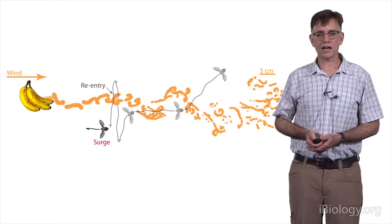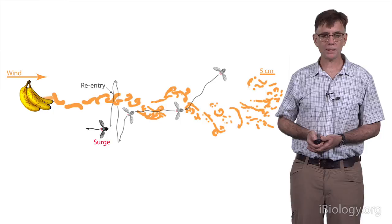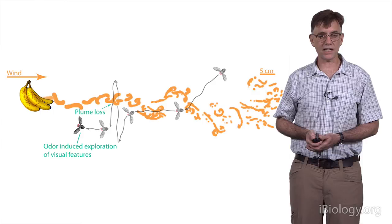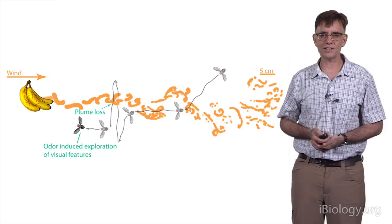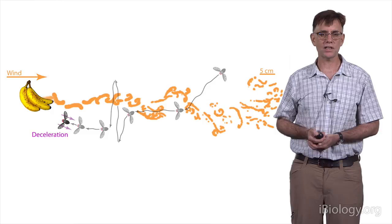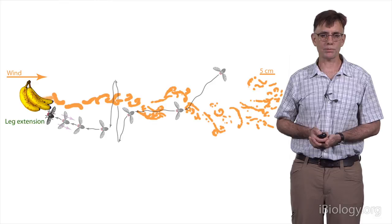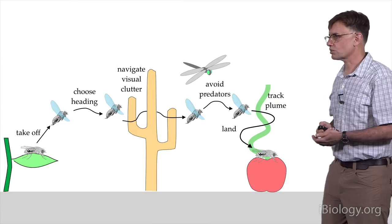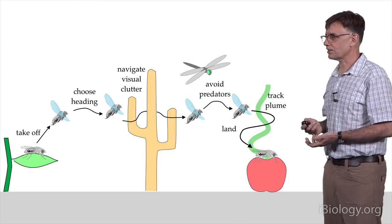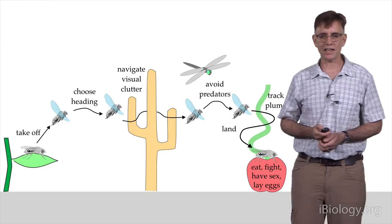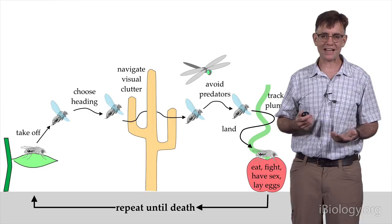So just to complete the fly's journey, the fly performs this cast-and-surge behavior, tracks the odor plume. When it loses the odor plume, it casts. When it sees a conspicuous object, which I've just sort of cheesily cartooned here as a bunch of bananas, when it sees the visual objects, it's attracted to those visual objects. The expansion of that visual object actually makes the animal decelerate. It also makes the animal stick out its landing gear in preparation for landing. And it lands. And now we've sort of completed this journey from takeoff to landing. Now, if the fly was lucky, it's found a nice piece of rotting fruit, in which case it gets to eat, fight, have sex, lay eggs. And then it basically repeats this process until death, and that's the happy life of a fruit fly.